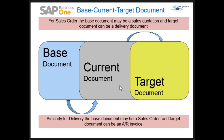Let us look at the base document and the target document, and the relationship between the marketing documents. The base document is the marketing document that was copied from, and the target document is the marketing document that is being copied to. The base and target documents are the building blocks of the overall relationship in SAP Business One — we use them to customize AR invoice printouts, show backorders, and other things.